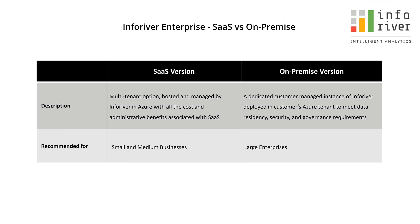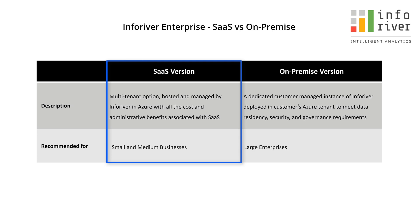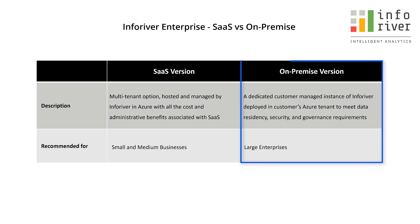InfoRiver Enterprise comes in two flavors. Medium and small enterprises find the SaaS edition useful as the Azure tenant and services infrastructure is hosted and managed by InfoRiver, which can get you started almost instantly. For larger enterprises, we recommend using your own Azure private tenant or on-premises implementation, which gives you complete control over the infrastructure.